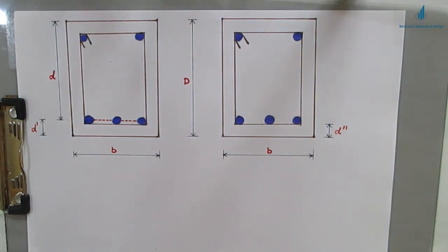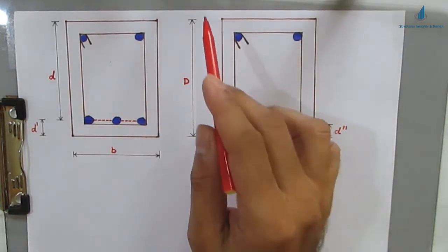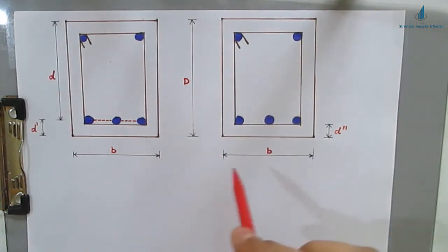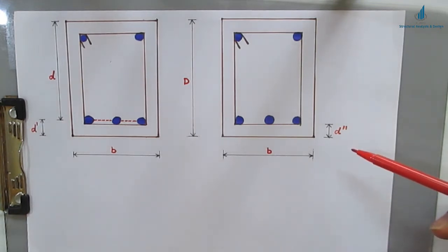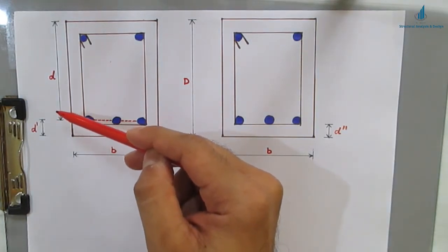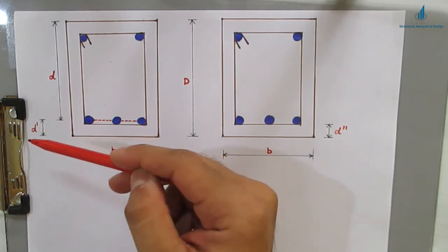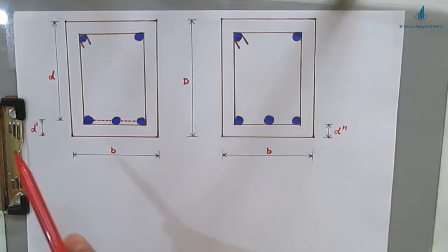In analysis and design problems you have come across the words effective cover or clear cover. So what is the difference between those covers? I have taken two sections here having an overall depth D and width b. There are three small d's: one is small d (effective depth), one is d dash, and one is d double dash. Small d is the effective depth, d dash is the effective cover, and d double dash is the clear cover.